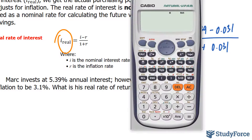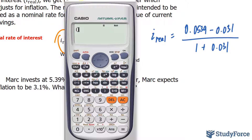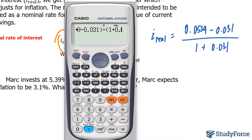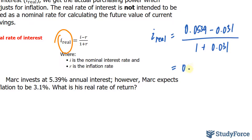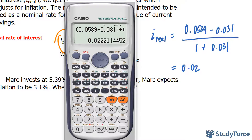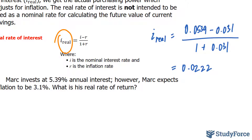Let's use our calculator. In the numerator we have 0.0539 minus 0.031, and that gets divided by the denominator, which is 1 plus 0.031. We end up with the real rate of interest being 0.0222, which when rounded is roughly 2.22%.